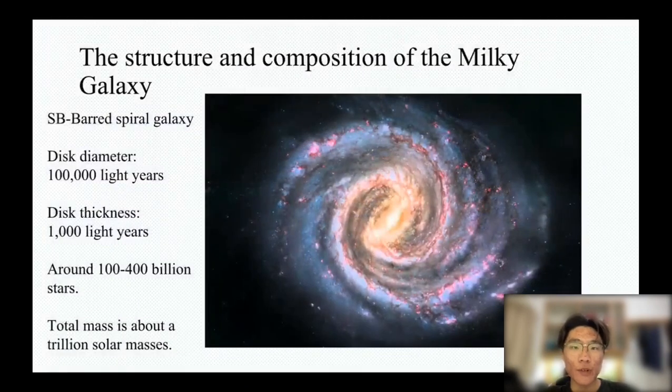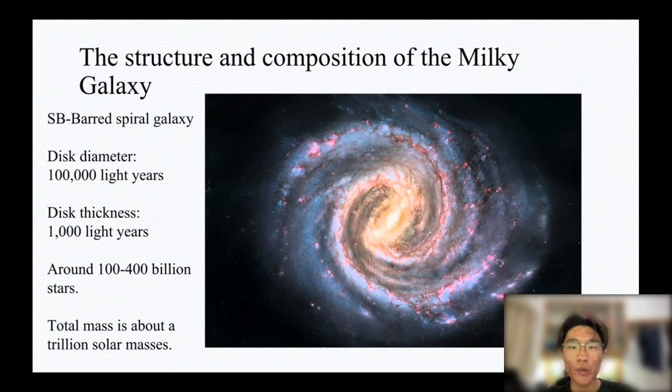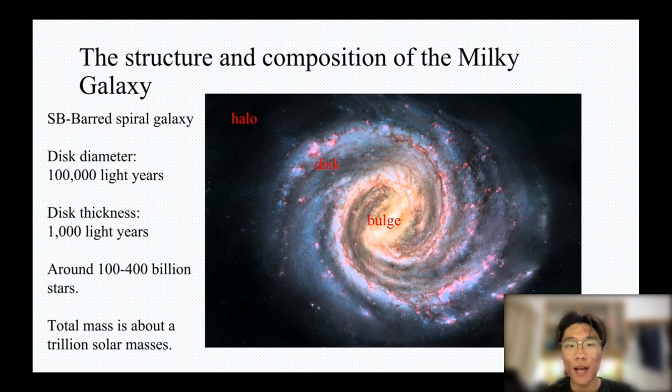I will start with a brief introduction to the structure of the Milky Way. Milky Way is a barred spiral galaxy. There are roughly three parts: bulge, disk, and halo. The disk diameter is around 100,000 light years, and the thickness is around 1,000 light years.